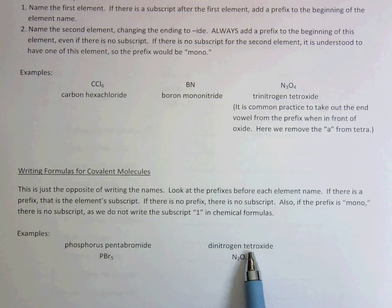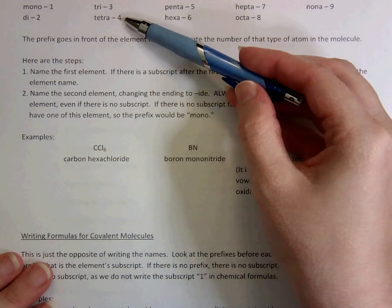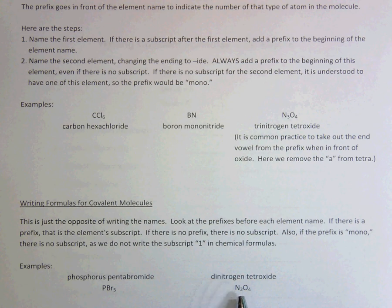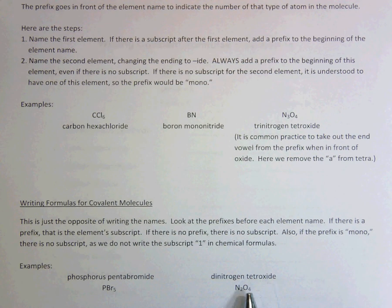And tetraoxide, tetra is four, as we can see from our list up here. Tetra is four, and oxide comes from oxygen. So O is my symbol for oxygen. Tetra is four, so I put O4. Dinitrogen, N2, tetraoxide, O4.